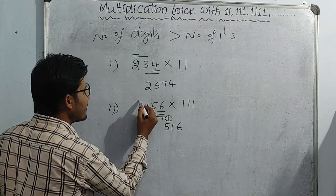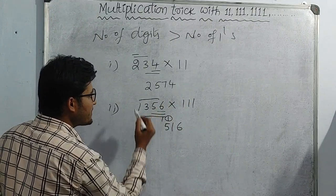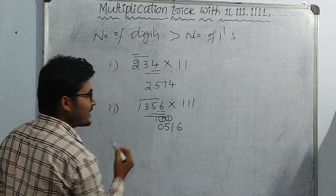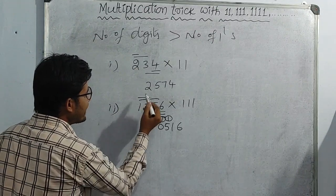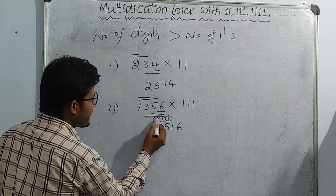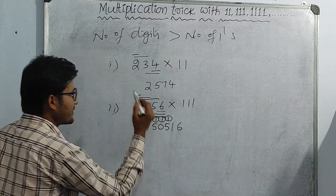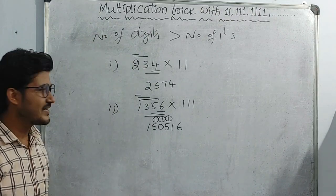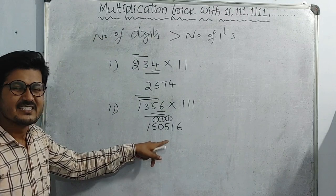Continuing left to right: 1 plus 3 plus 5 equals 9 plus 1 equals 10, so 1 carry. In the middle: 1 plus 3 equals 4 plus 1 equals 5. Final number is 1. So 1,356 into 111 is 150,516.